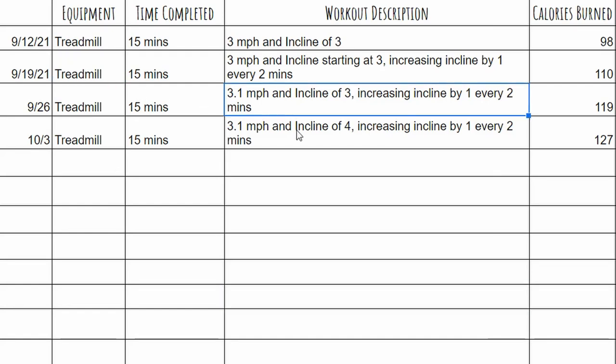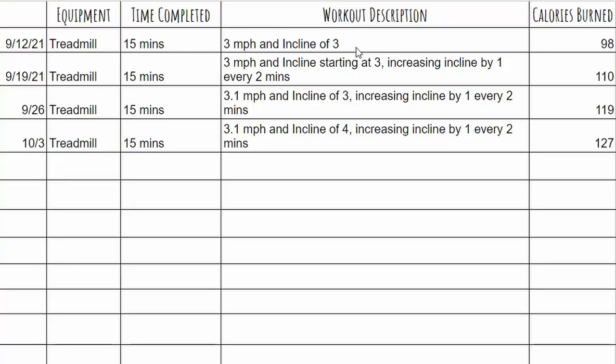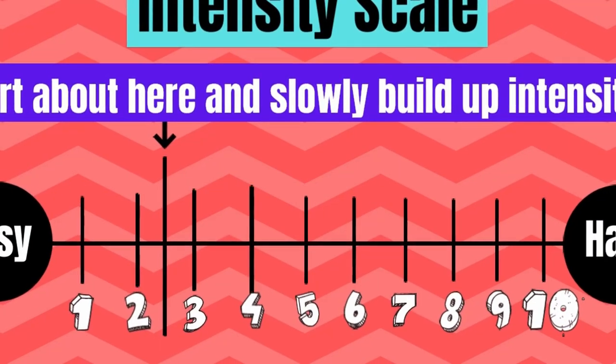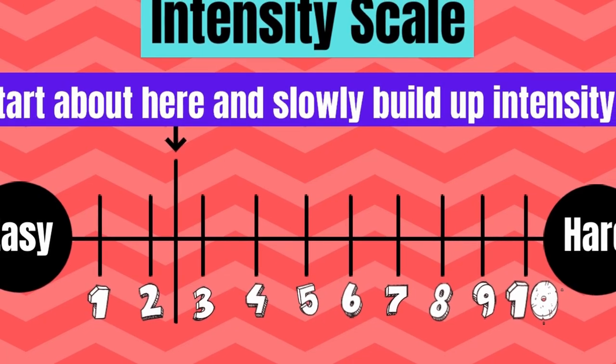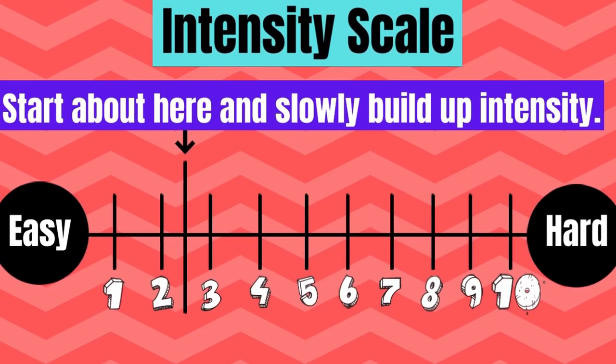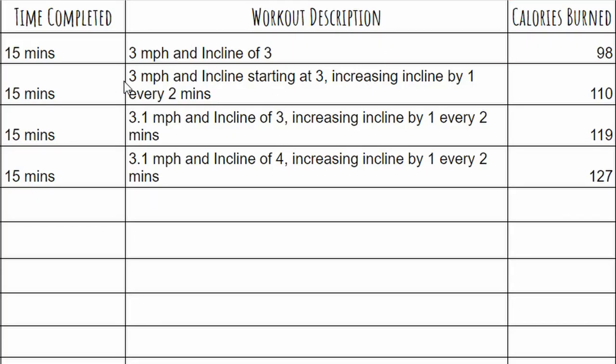Let's take a quick look at the cardio log I use with my clients — each client has their own sheet. On the treadmill, I start many clients with uphill walking, often at a 3-3: a speed of three miles per hour and an incline of three. Some clients will find this pathetically easy and others not so much. It's usually better to start somewhere around here and slowly build up. Sometimes I'll have a client start at a 3-3 and then every two minutes raise the incline by one — for many clients, this can actually be pretty challenging.